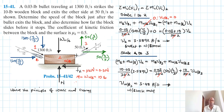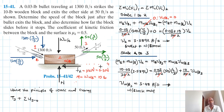Starting from state three — the bullet has already exited but the block still has velocity — we write T3 plus the summation of work done from three to four equals T4. State four is when the block comes to rest, somewhere ahead. So T4 = 0, since the block's kinetic energy is zero at that point.